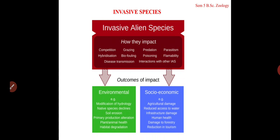Environmental outcomes of invasive species include modification of hydrology, decline of native species populations, soil erosion, and alteration of primary production. Habitat degradation is also common. One example is Mikania — an invasive plant species. Once it gets into an ecosystem, it spreads over existing plants, whether big trees or smaller shrubs, growing over them and completely shading the native plants.